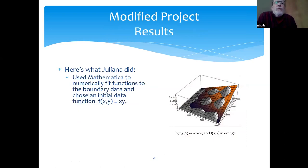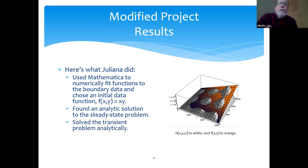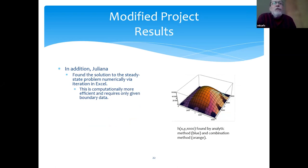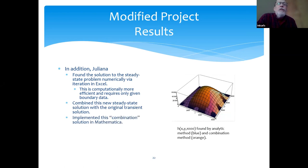So here's what Juliana did. She used Mathematica to numerically fit functions to the boundary data and chose an initial data function. She just picked F of x,y equals x times y. Then she found an analytic solution to the steady state problem and solved the transient problem analytically. She implemented the solution in Mathematica. Here we're comparing the solution at time zero, that's the white plot, to the initial head level at time zero, that's the orange plane. Juliana also found the solution to the steady state problem numerically by means of iteration in Excel. It turns out that's computationally more efficient and requires only given boundary data. Combining this new steady state solution with the original transient solution, she implemented this combination solution in Mathematica. Then she used Mathematica to compare both solutions she found, the analytic and the combination solution. Here you have a plot where she's comparing both solutions graphically to show that they're close.